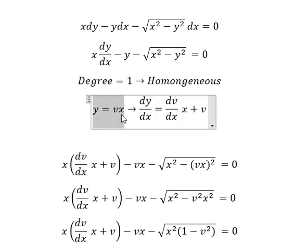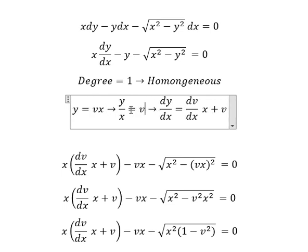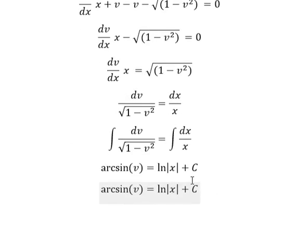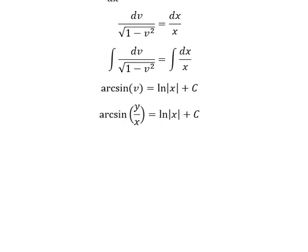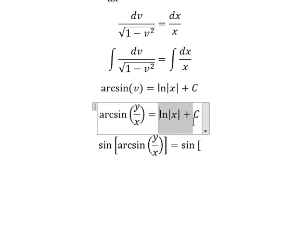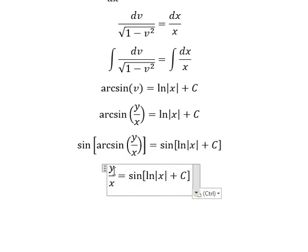We replace v with y over x. Next, we apply sine to both sides. Then we multiply both sides by x to get the final solution: y equals x times sin of ln of the absolute value of x plus C.